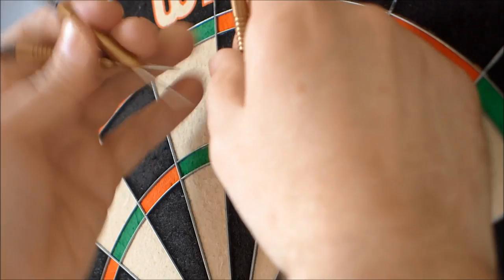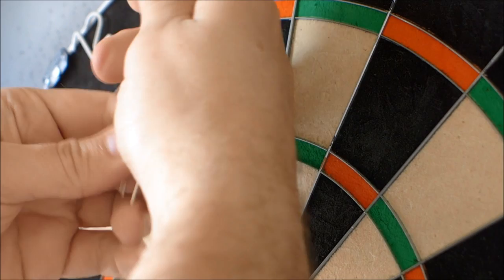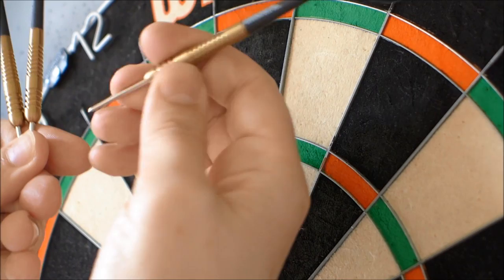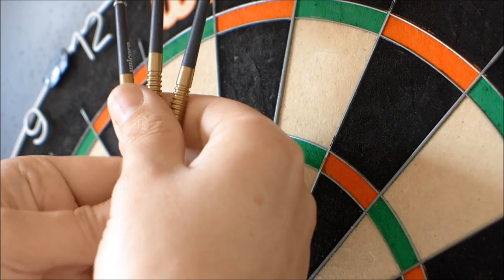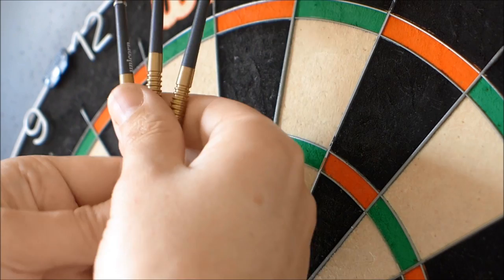Right there you go, it's the Unicorn Kyle Anderson 23 gram darts. It's a lovely looking dart, I always like the gold coated darts. But if you like a front weighted dart with a great grip, and whether you're a front gripper or a rear gripper, this is really good for that. And also like I said, if you've got a bit of a loopy throw it works great for that. So there you go, that's the end of the review, thanks for watching.